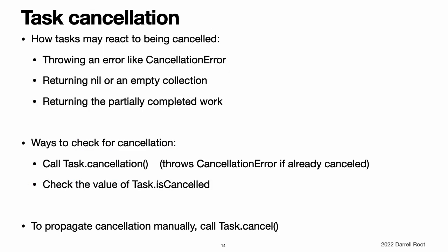Task cancellation. Swift concurrency uses a cooperative cancellation model. Each task checks whether it has been cancelled at the appropriate points in its execution and responds to cancellation in whatever way is appropriate. Depending on the work you are doing, that usually means one of the following: throwing an error such as CancellationError, returning nil or an empty collection, or returning the partially completed work. To check for cancellation, either call Task.checkCancellation(), which throws CancellationError if the task has been cancelled, or check the value of Task.isCancelled and handle the cancellation in your own code. For example, a task that is downloading photos from a gallery might need to delete partial downloads and close network connections. To propagate cancellation manually, call Task.cancel().